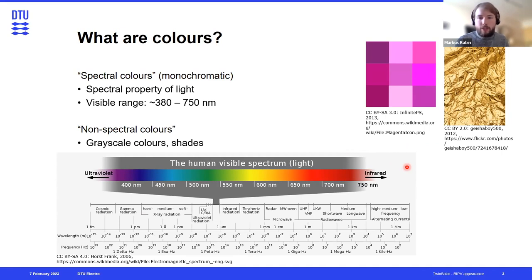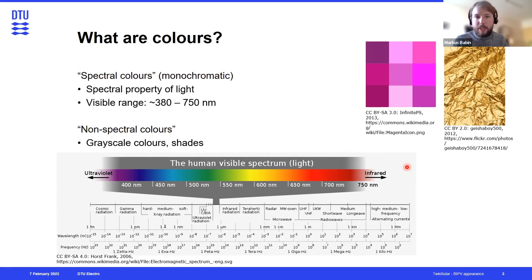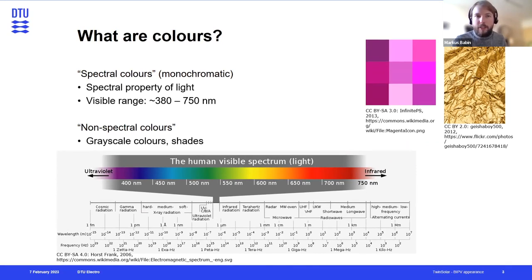There are also a number of colors we humans simply cannot see, but other organisms or animals might be able to in the infrared or the ultraviolet.